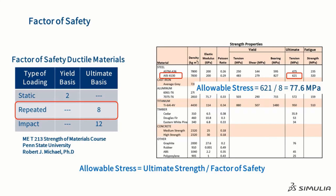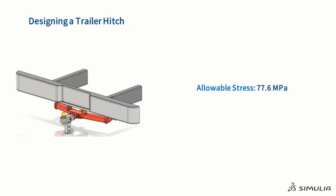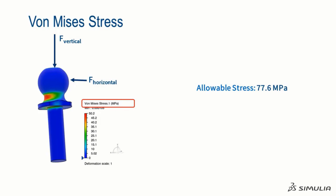We are now ready to show you how you can use the allowable stress limit with 3D experience. To do that, we will introduce a trailer hitch application. Right now we will concentrate on designing the ball. To facilitate our discussion, we have created a section view. For this simple case, we will assume that the trailer applies two loads on the ball: a vertical load due to the weight of the trailer, and a horizontal load due to us pulling on the trailer. We can apply these loads to our model in 3D experience. After we run the simulation in 3D experience, we compare the Von Mises stress calculated to the allowable stress limit. Since the Von Mises stress is only 50.2 MPa, the design of the ball is acceptable.